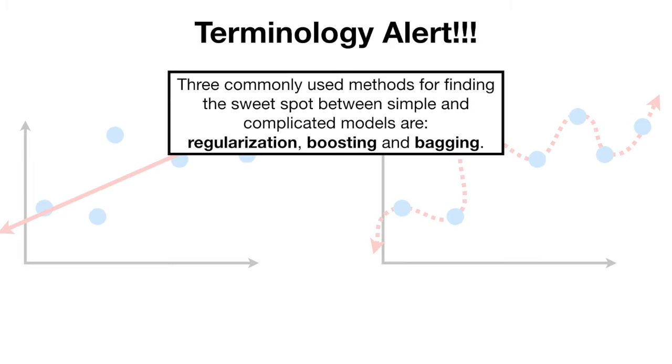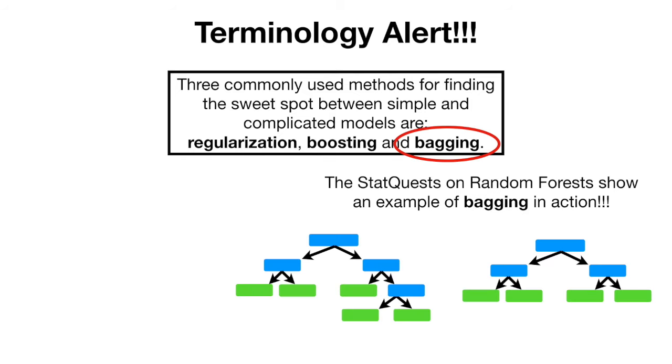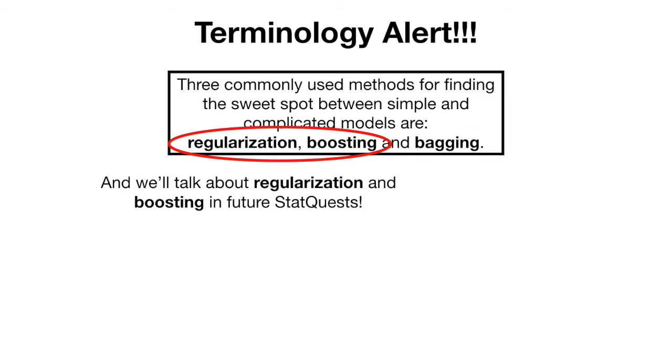Oh no! Another terminology alert! Three commonly used methods for finding the sweet spot between simple and complicated models are regularization, boosting, and bagging. The stat quests on random forest show an example of bagging in action. And we'll talk about regularization and boosting in future stat quests.